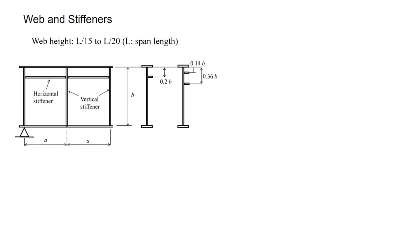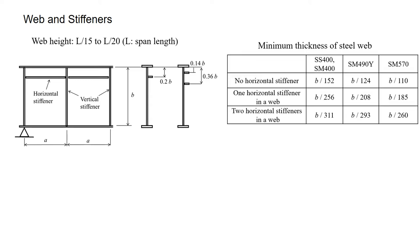The web height is usually L/15 to L/20, where L is the span length. As the web mainly resists shear force, it can be verified by stress calculation. However, a thin plate is vulnerable to shear buckling. Therefore, the minimum thickness is specified in a table, giving different values for no horizontal stiffener, one horizontal stiffener, and two horizontal stiffeners.